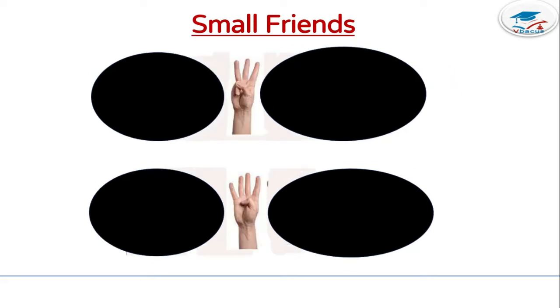In the next figure, how many fingers are open? 3. How many fingers are closed? 2. So, 2 is a friend of 3. You can write it as 2, 3.